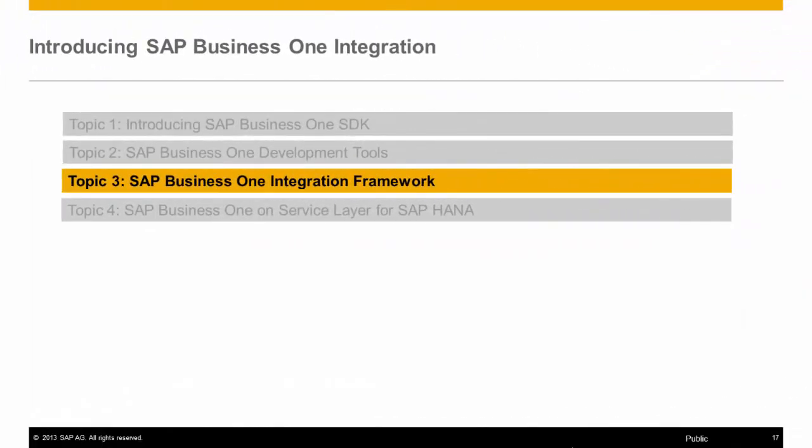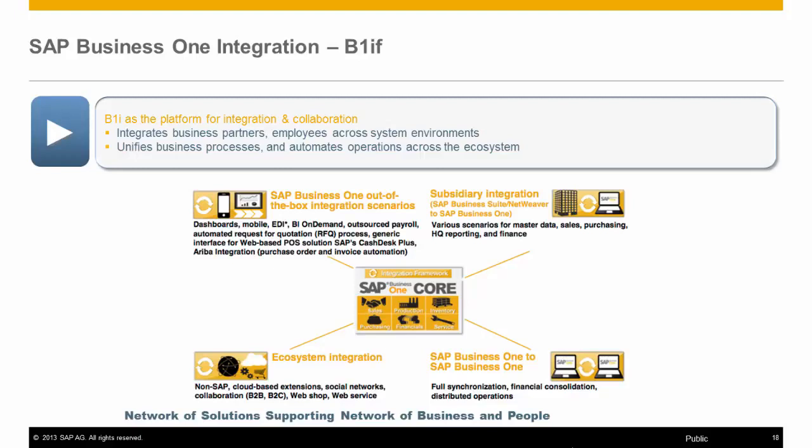I'd like to show another method of integration called the SAP Business One Integration Framework. The SAP Business One Integration Framework, or B1IF, is an integration solution delivered out of the box with SAP Business One, based on the SAP Integration Platform. It supplies the integration blocks used by all integration solutions in this category, including SAP Business One Integration for SAP NetWeaver for subsidiary integration. The B1IF also hosts the SAP Business One Mobile Integration for devices such as phones and tablets. It integrates at the data level, offering real-time or offline data integration, and unifies business processes while automating operations across the ecosystem.